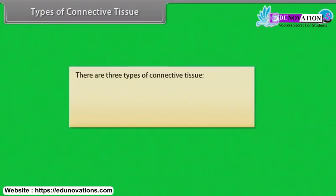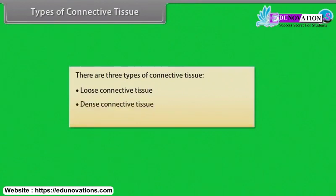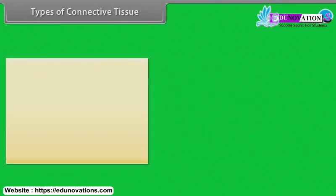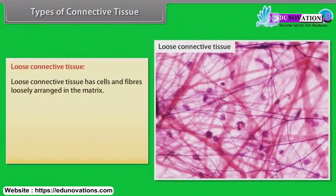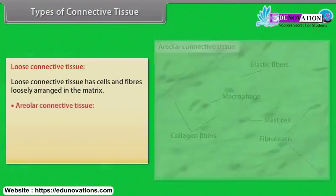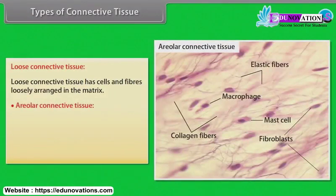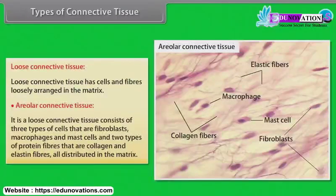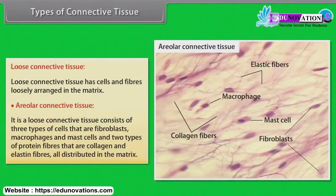Types of connective tissue. There are three types: loose connective tissue, dense connective tissue, and specialized connective tissue. Loose connective tissue has cells and fibers loosely arranged in the matrix. Areolar connective tissue consists of three types of cells — fibroblasts, macrophages and mast cells — and two types of protein fibers — collagen and elastin — all distributed in the matrix.